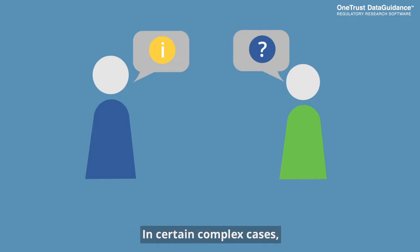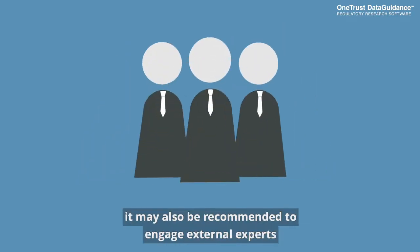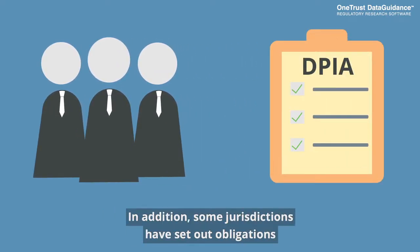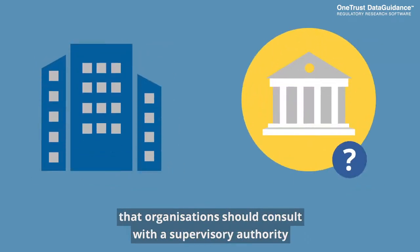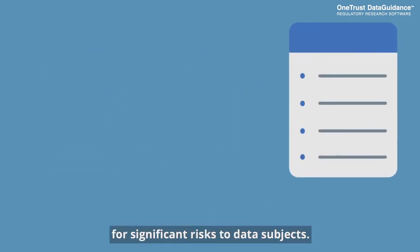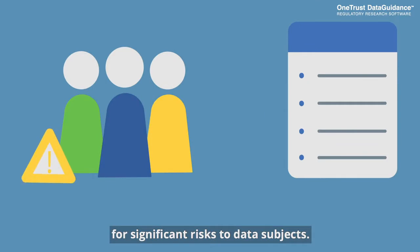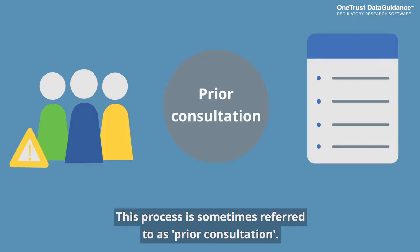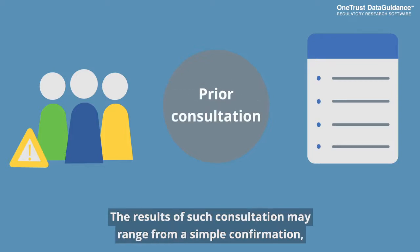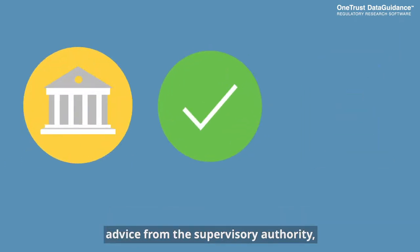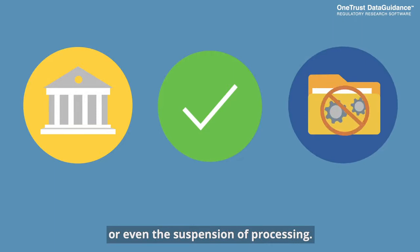In certain complex cases, it may also be recommended to engage external experts to assist in completing a DPIA. In addition, some jurisdictions have set out obligations that organizations should consult with a supervisory authority when an assessment shows that there is potential for significant risks to data subjects. This process is sometimes referred to as prior consultation. The results of such consultation may range from a simple confirmation, advice from a supervisory authority, or even the suspension of processing.